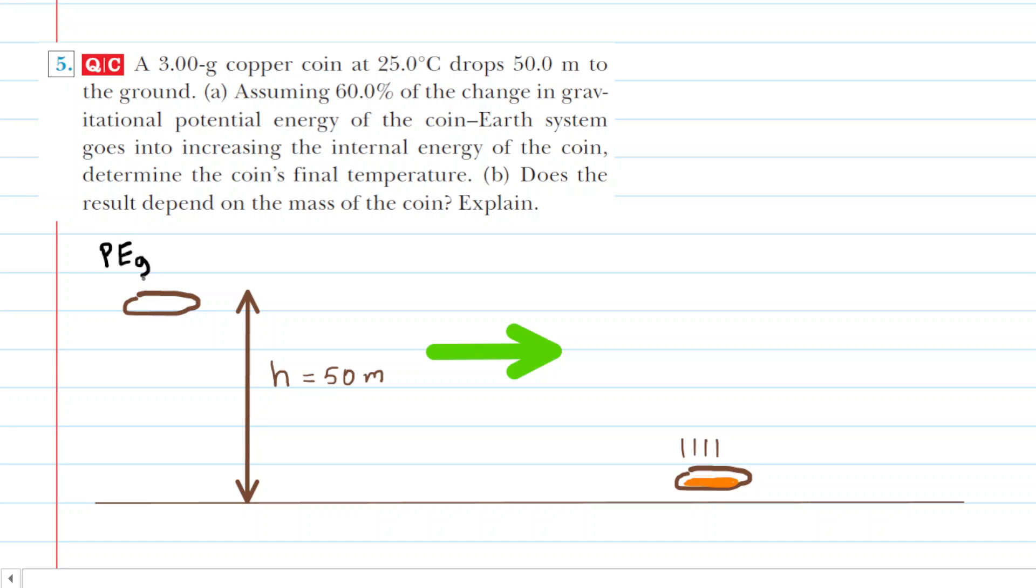This is the initial energy present in the coin. When the coin falls to the ground, it loses that gravitational potential energy, but energy has to go somewhere. Where does the energy go?